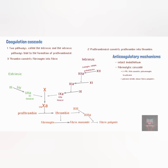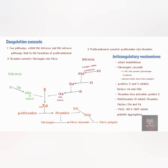Additionally, Protein C and Protein S inhibit activated Factor V and Factor VIII. Even though thrombin is a pro-coagulant, it also inhibits excessive coagulation by activating Protein C. There is also antithrombin III, which inhibits thrombin and activated Factors IX and X. Finally, prostacyclin, nitric oxide, and adenosine diphosphate also inhibit platelet aggregation.